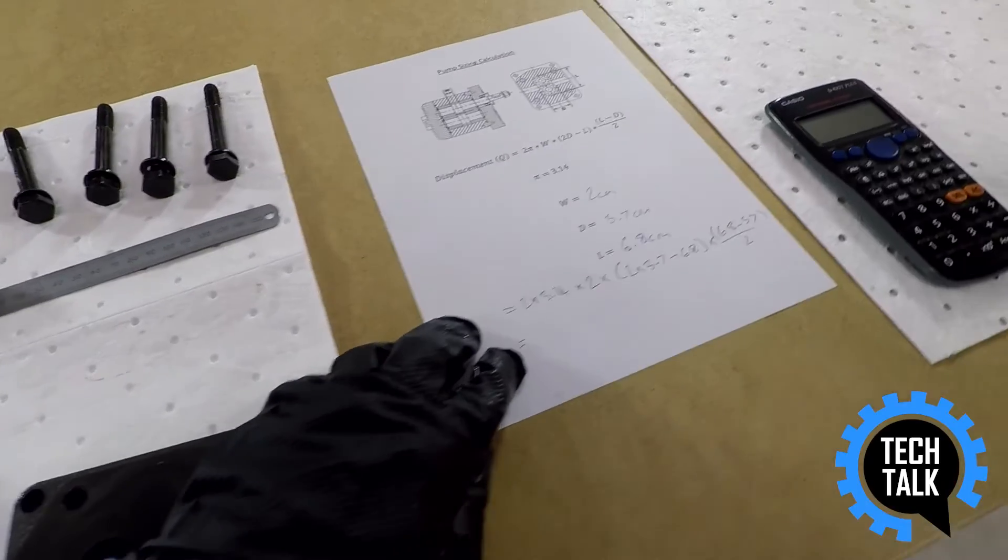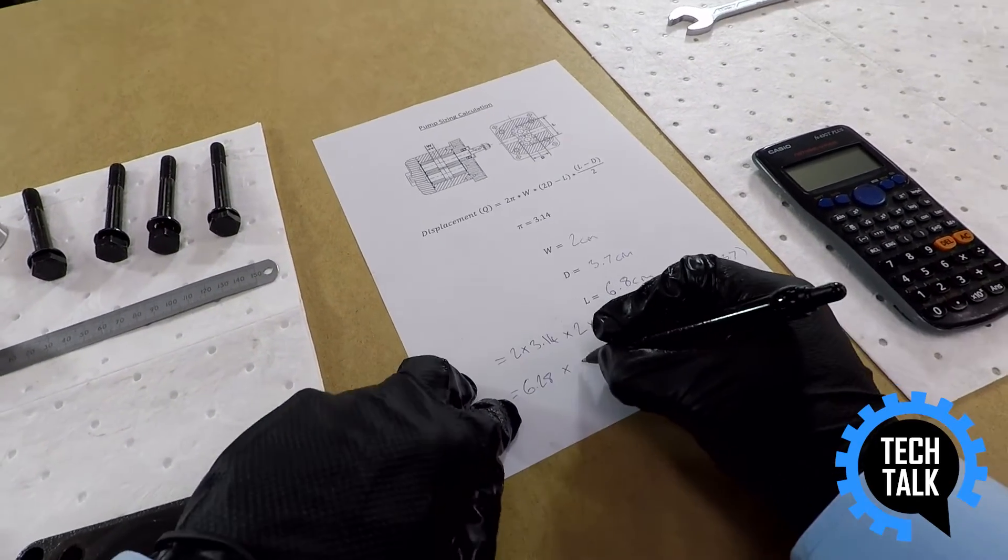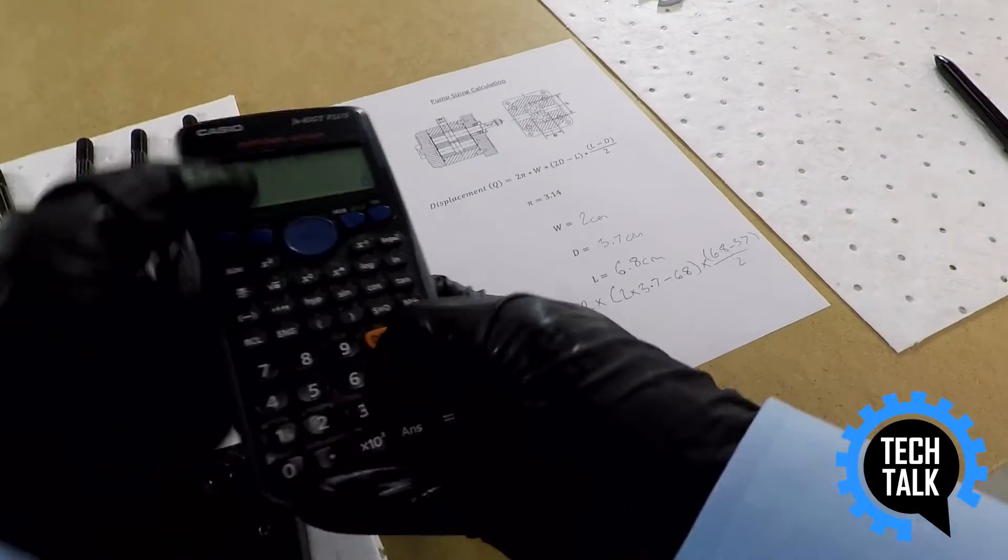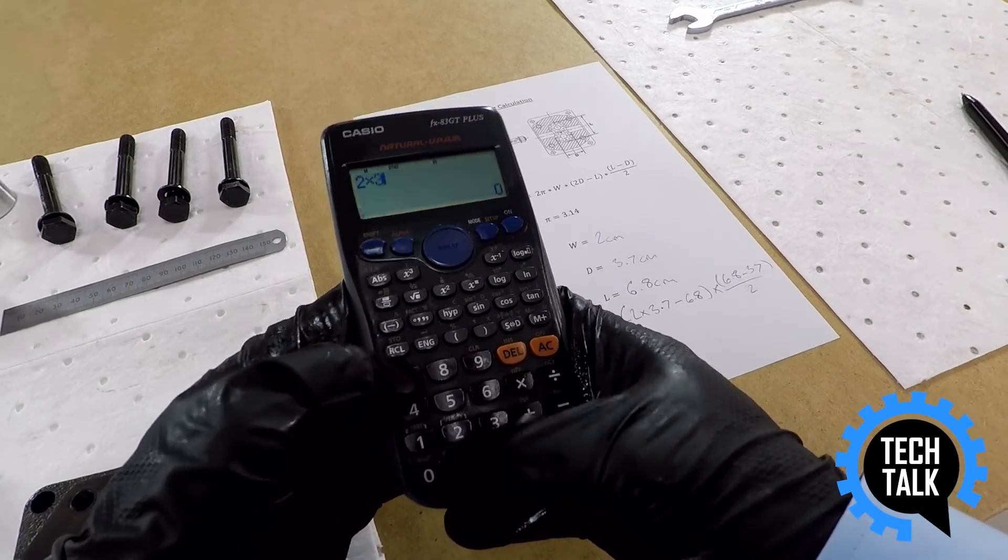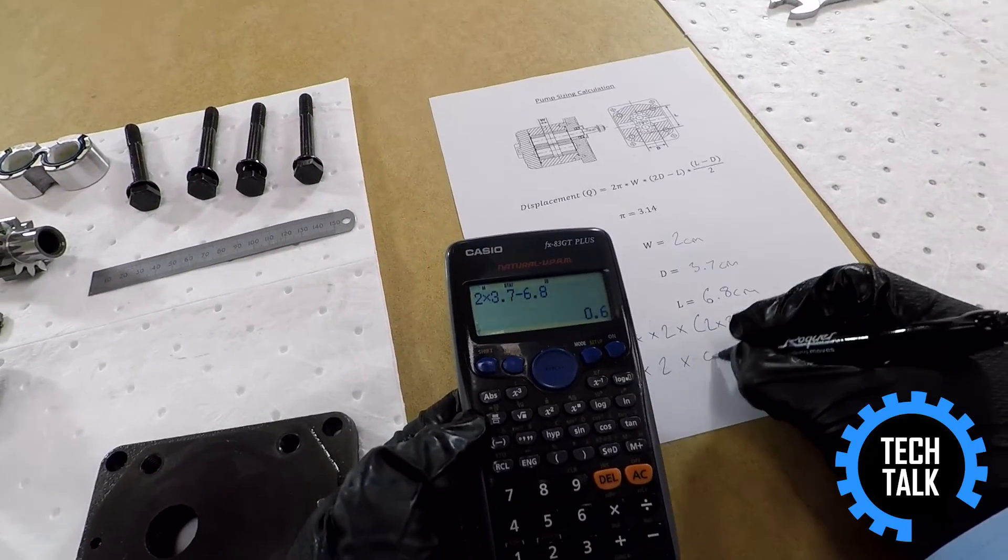Now simplified with 6.28, multiplied by 2, multiplied by, make sure we get this right, so 2 times 3.7 minus 6.8 is 0.6.